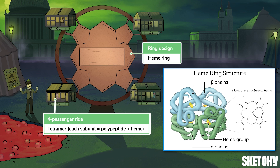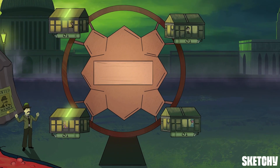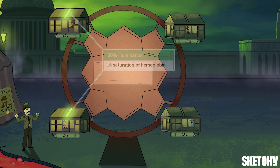Even though our wheel has just one large, heme-like ring at its center, each subunit of the hemoglobin tetramer consists of a polypeptide chain and a heme group at its center. This all adds up to four polypeptide chains, four heme groups, and most importantly, four oxygen binding sites. Four oxygen molecules is the maximum absolute number that can bind to hemoglobin, but we can also think of oxyhemoglobin binding in relative terms, known as percent saturation of hemoglobin.